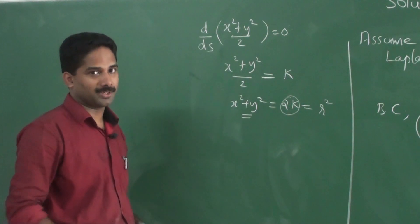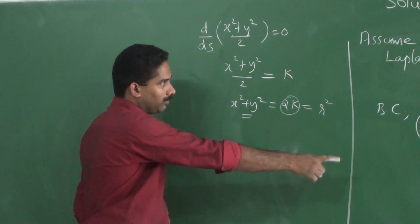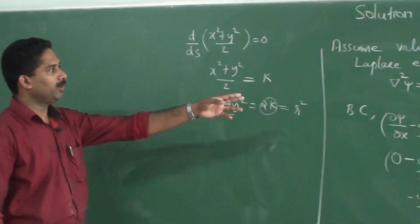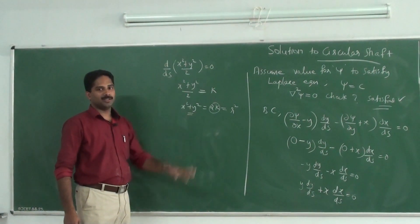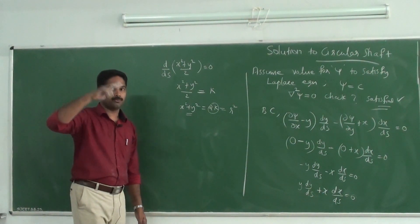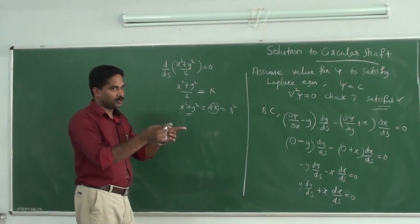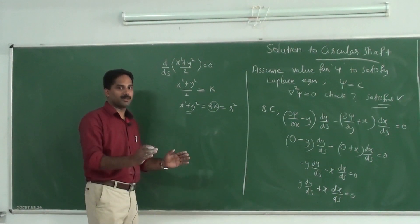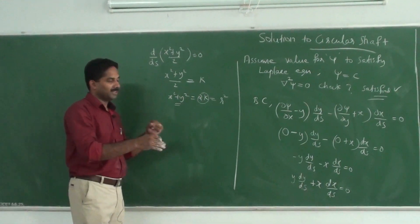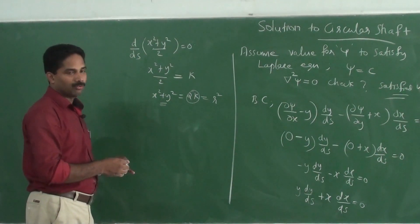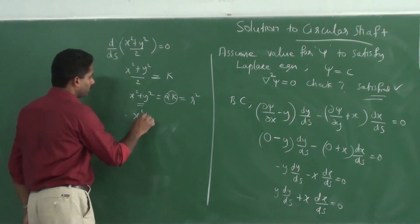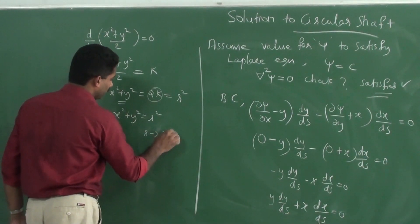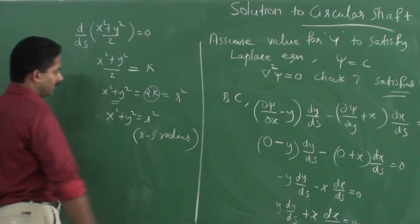So this is the equation obtained. If we assume that the warping function psi is equal to a constant, we get x² + y² equal to a constant — which is exactly the equation of a circle. For our circular shaft solution, we just assume that, starting with psi equal to constant, and we have x² + y² = r², where r is the radius of the circle, the radius of the shaft.